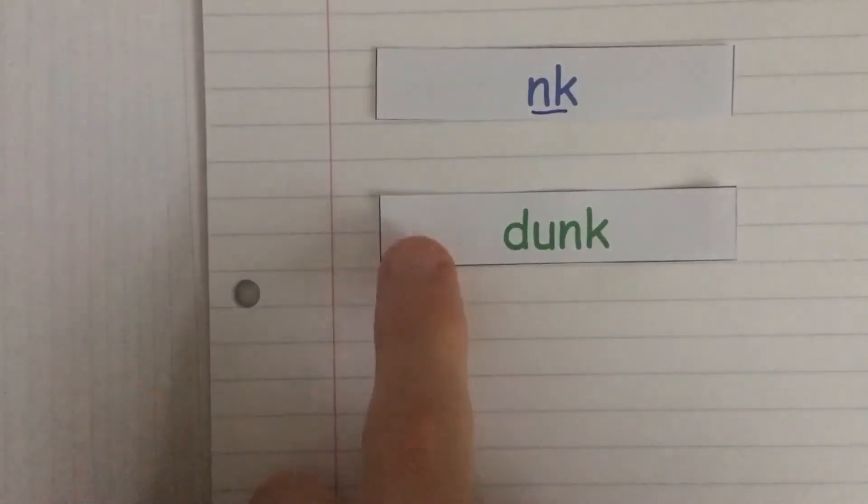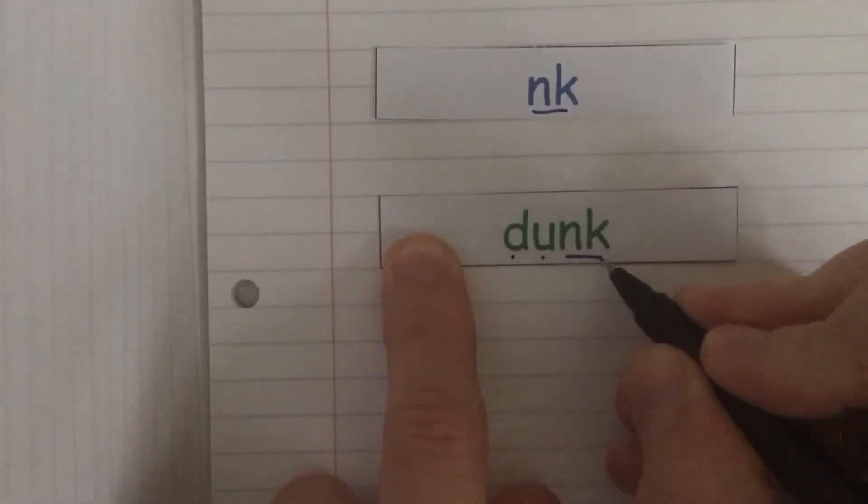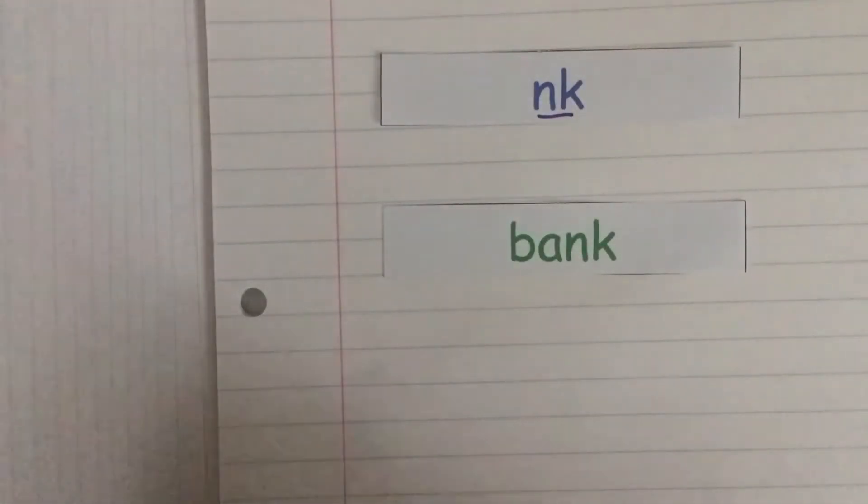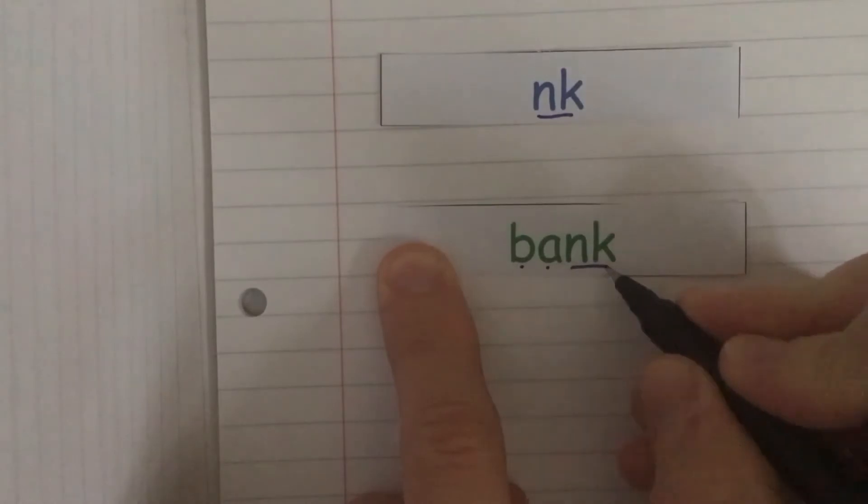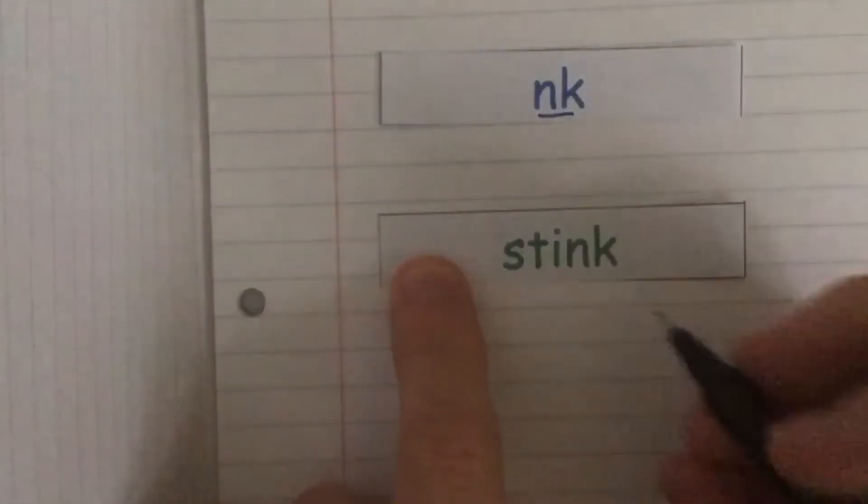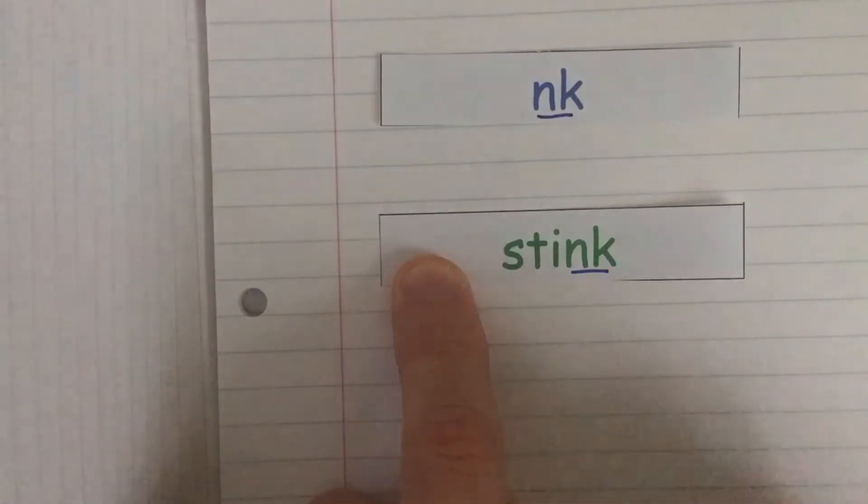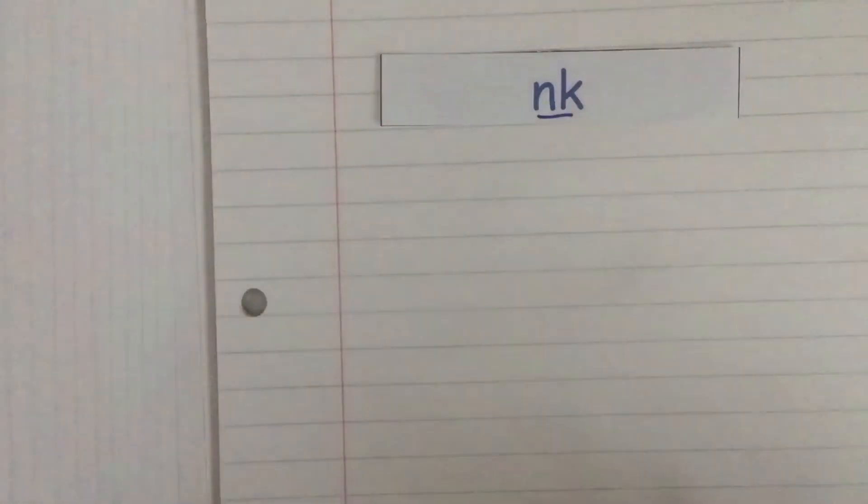Special friends nk. Fred talk: d-a-nk. Dunk. Now let's have a look at some alien words with the nk sound.